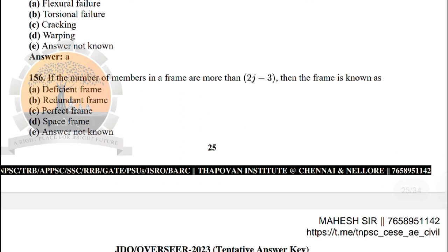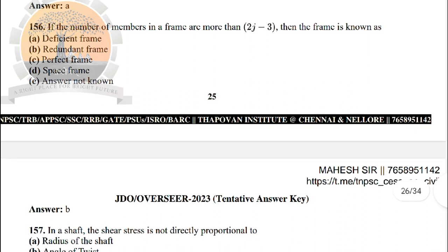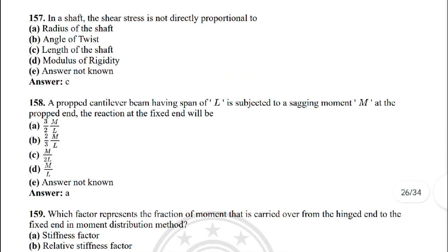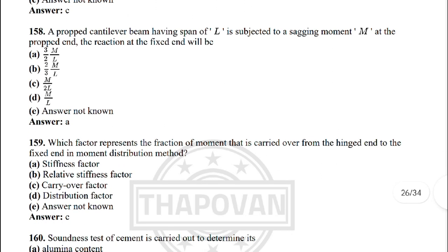Next: if the number of members in a frame is more than (2j − 3), then the frame is known as — the correct answer is option B: redundant frame. Next: in a shaft, the shear stress is not directly proportional to — the correct answer is option C: length of the shaft.